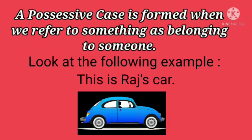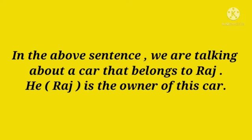Look at the following example: This is Raj's car. In the above sentence we are talking about a car that belongs to Raj. Raj is the owner of this car. The sentence is: This is Raj's car, and we are talking about the car that belongs to Raj.